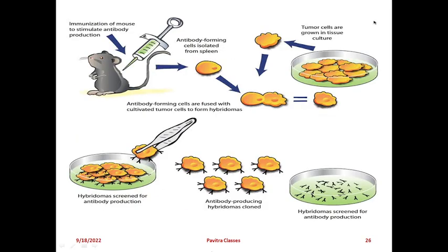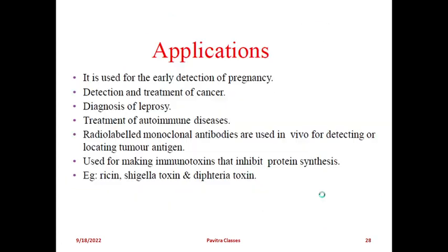To screen the hybridoma for antibody production, HAT medium with polyethylene glycol is used. Applications of hybridoma technology include early detection of pregnancy, detection and treatment of cancer, diagnosis of leprosy, and treatment of abdominal diseases. Radiolabeled monoclonal antibodies are used for detection or localization of tumor antigens. They are also used for making immunotoxins that inhibit protein synthesis. Examples include diphtheria toxin, Shiga toxin, and ricin.